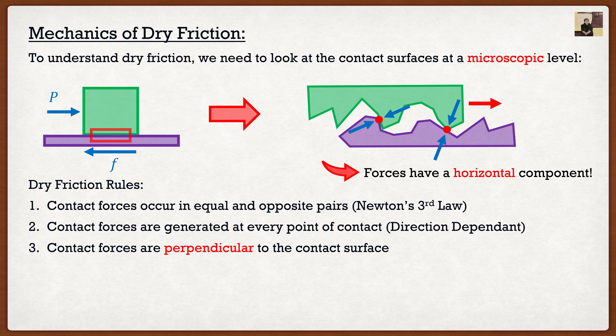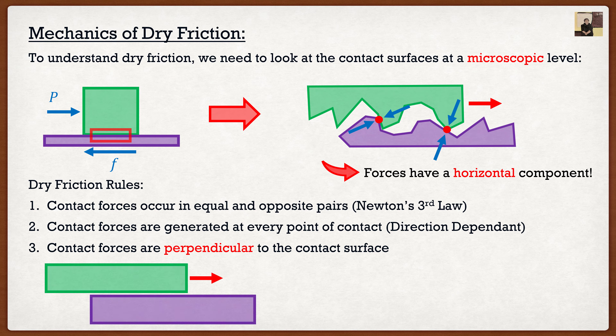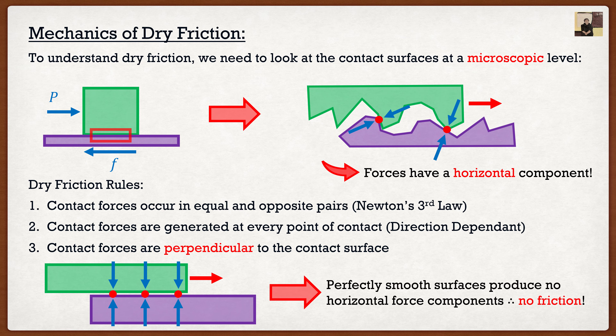Now let's say we had two bodies with perfectly smooth surfaces. If we were to look at the contact points, only a vertical force develops because they're perfectly smooth surfaces. So if we have a perfectly smooth surface, we don't have friction because those contact forces don't have a horizontal component. The smoother the surface, the less frictional force it can develop. The rougher the surface, the more frictional force it will develop.